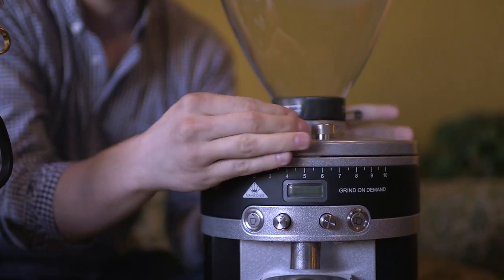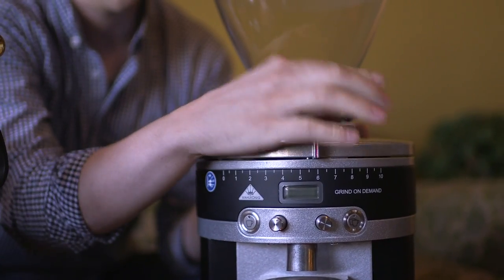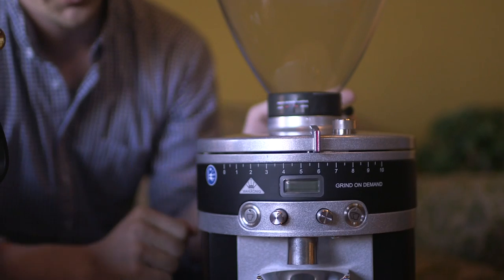You have 65 millimeter flat burrs with step-less adjustment. It's really easy. Just unscrew, set it left or right, screw it down, tighten it up. Really easy to adjust.